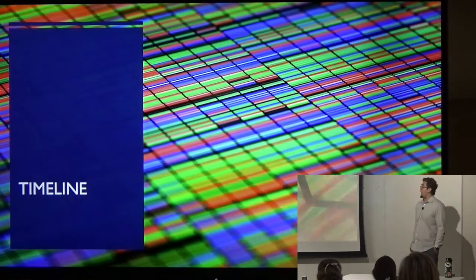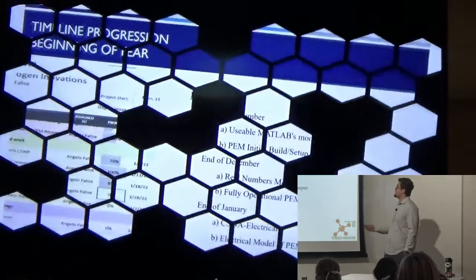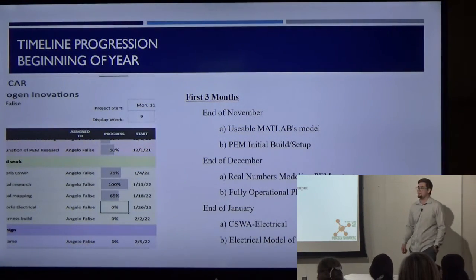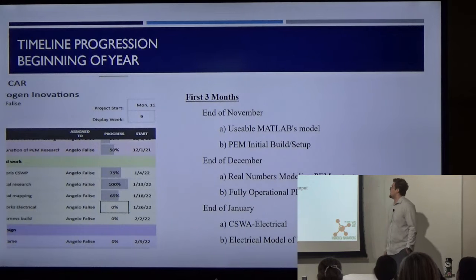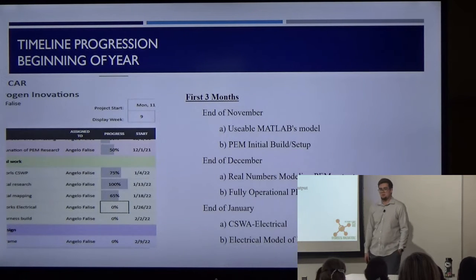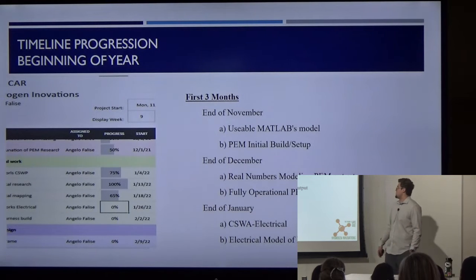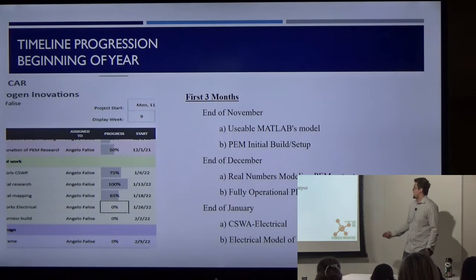My timeline. I was very ambitious at first. By the end of November, I wanted to have usable data for my MATLAB. I wanted to just knock that out and get it done. Didn't happen. I wanted to have the build set up and be able to test my fuel cell. Didn't happen. End of December, wanted real world numbers and fully operational fuel cell. Didn't happen.